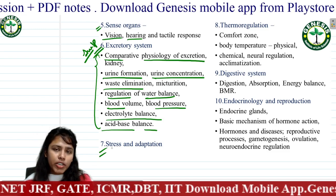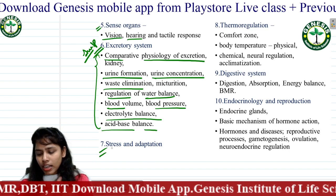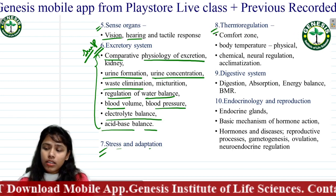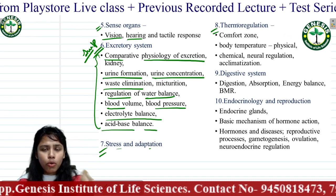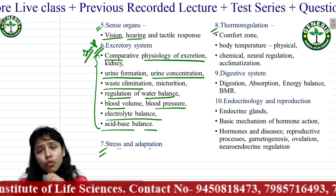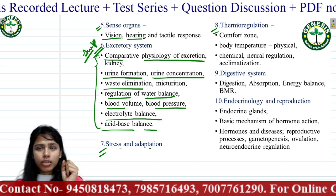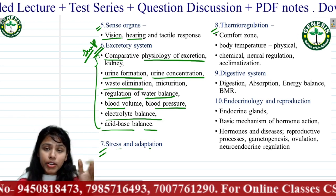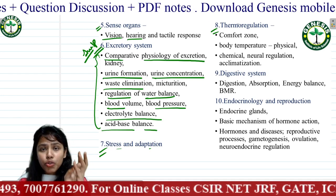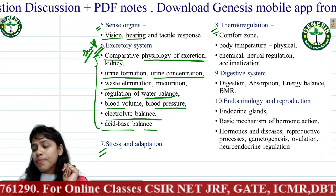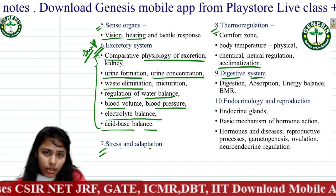Next is stress and adaptation — which hormones are activated under stress conditions and what changes the body adopts. Then thermoregulation: the term 'thermo' relates to temperature. You will learn about ectotherms and endotherms, animals that fall in both categories, and the regulation of body temperature through neural and chemical activity. Acclimatization will also be covered.